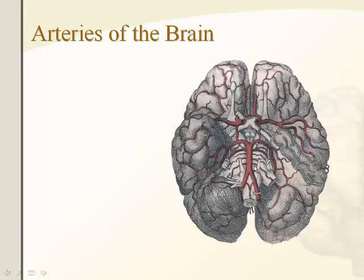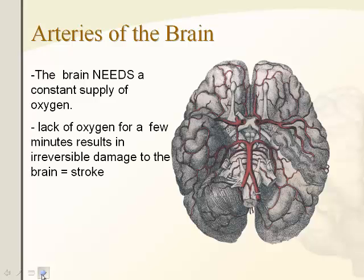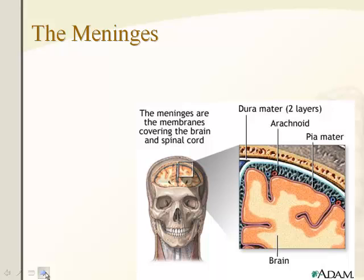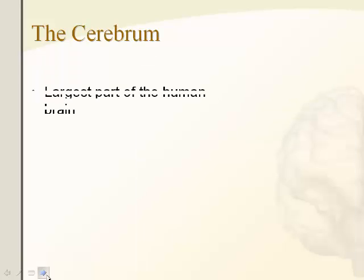The arteries of the brain provide nutrients for cellular respiration — making energy. If something blocks one of these arteries, it results in lack of oxygen to the brain, which is called a stroke, causing irreversible brain damage. The meninges is the layer that separates the bone and the nervous tissue in the head. Meningitis is a bacterial infection that happens between the bone and the nervous tissue.